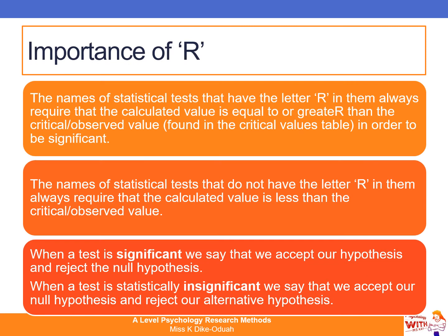We need to recap the importance of the letter R when it comes to statistical significance. Statistical tests whose names contain the letter R always require the calculated value to be equal to or greater than the critical value from the critical values table. Tests that do not contain R require the calculated value to be less than the critical value to be significant. When a test is significant, we accept our hypothesis and reject the null hypothesis. When insignificant, we accept the null hypothesis and reject the alternative. The null hypothesis states there is no difference or no relationship between the variables.